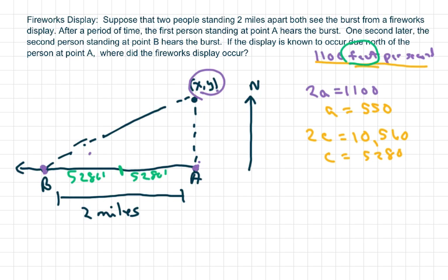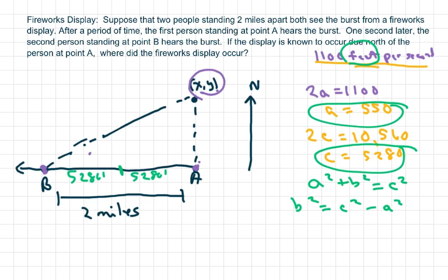So now we have our A and we have our C. And with hyperbolas, we know that A squared plus B squared equals C squared. Or we could say that B squared equals C squared minus A squared. So we have B squared equals 5,280 squared minus 550 squared. And that gives us 27,575,900.